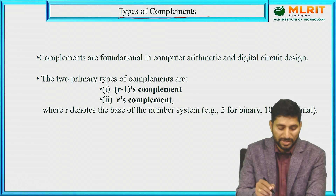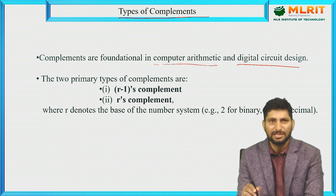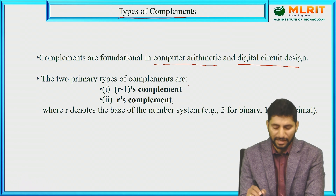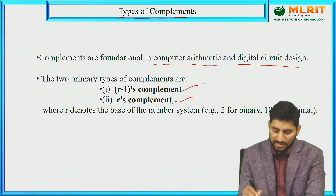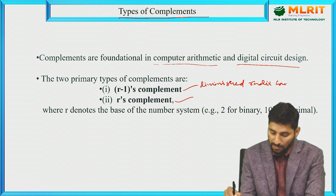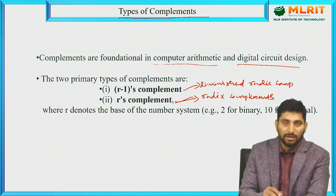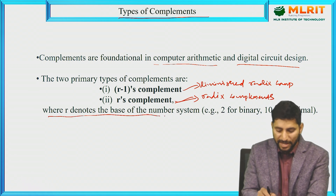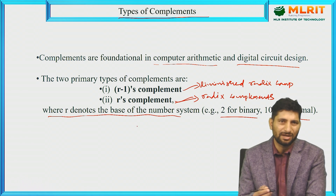Now let us move on to types of complements. Complements are foundational in computer arithmetic and digital circuit design. They are primarily of two types: r minus 1's complements, also known as diminished radix complement, and r's complements, where r denotes the base of the number system.